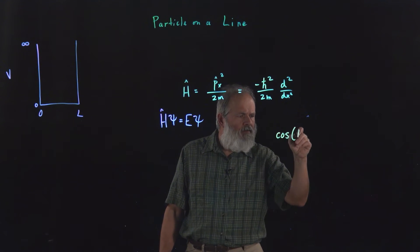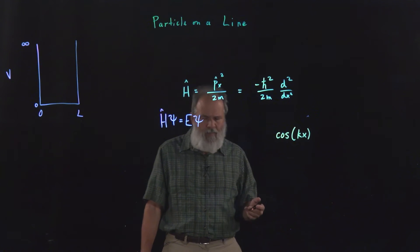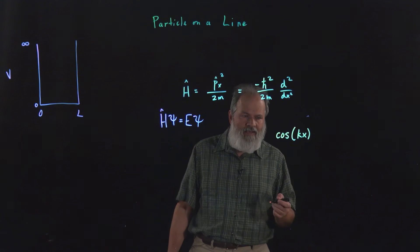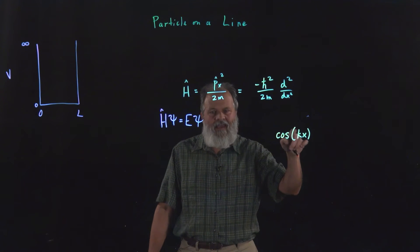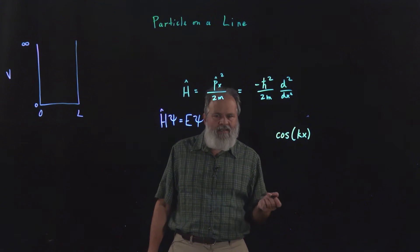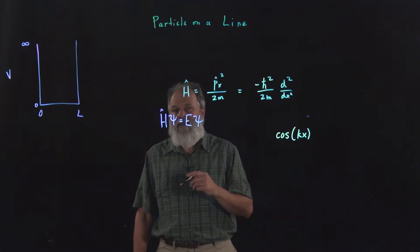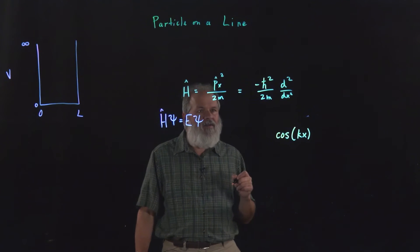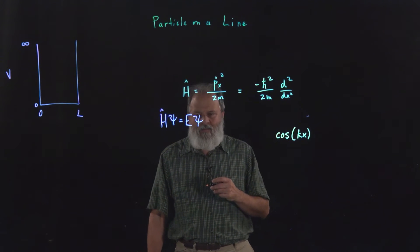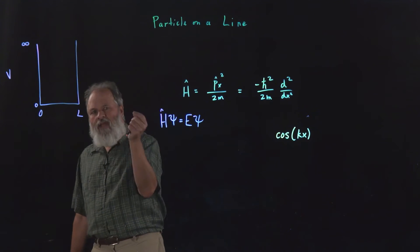Cosine of kx. If you take the derivative of the cosine, you get minus sine. And then if you take the derivative of minus sine, you get minus cosine. Then of course you get k a couple of times. So the second derivative of cosine kx is going to be minus k squared cosine of kx, where k is a constant in this particular problem.